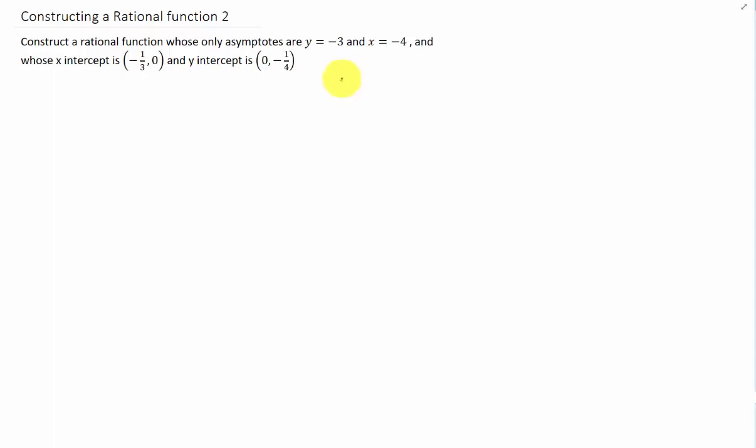Let's construct a rational function now with these conditions. We have a horizontal asymptote at y equals negative 3. We have a vertical asymptote at x equals negative 4. And we have the following two intercepts. Now in the last problem we started with our vertical asymptote.